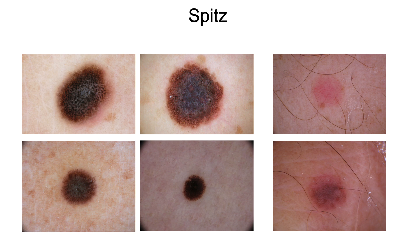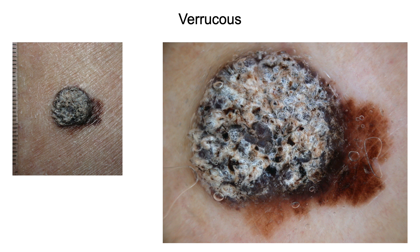Spitz melanoma usually appears as a pigmented macule or papule, clinically and dermoscopically simulating Spitz and Reed nevi. As you can see in this slide, classical dermoscopic patterns of Spitz nevi are frequently seen in Spitz melanoma, even though a multicomponent pattern is more common. Verrucous melanoma is a rare variant histologically characterized by prominent epidermal hyperplasia and verrucous surface, simulating squamous cell carcinoma or seborrheic keratosis. It usually appears as a pigmented papule, mainly located on the lower limbs, and may be correctly diagnosed only when classical melanoma dermoscopic criteria can be seen at the periphery of the lesion.